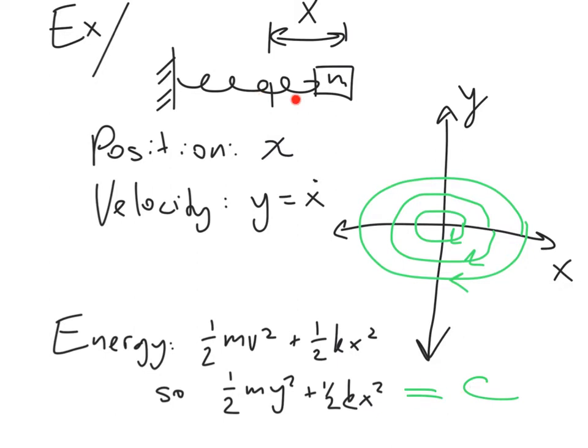The way we start the spring is we pull it out to some displacement x, then let it go, and it bobs back and forth. Because there's no friction, it bobs back and forth forever.